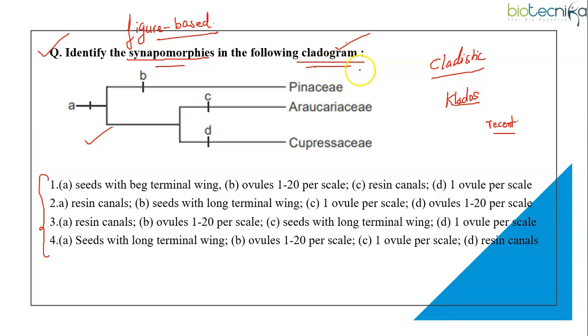Cladogram, it is again derived from Greek word clados which means branch and gramma which means character. It is a diagram which is used in cladistics to show relations among organisms. I am sure you have come across such type of diagrams. Either you can draw the cladogram this way or even you can draw it this way.